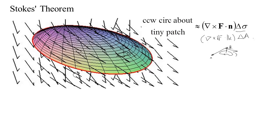Which direction the circulation goes is a subtle question here. In Green's theorem it was simply counterclockwise as viewed from above the xy-plane. Now, to figure out the circulation direction, we look at which direction we've chosen for the normal — there are two normals, one each way. Using the right-hand rule: put your right thumb in the direction of the normal, and the direction your fingers curl around determines which direction you're calculating the circulation. If we use the normal pointing up and out of the surface, we get circulation one way; the other normal gives the opposite circulation.